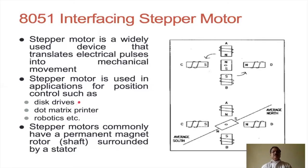In disk drives, the motors are used to position the head on the required sector and track. In a disk, there are a number of tracks and sectors, and the head has to be positioned properly. Similarly, in the dot matrix printer, the motor is used for positioning the head so that the printer prints from left to right, or for moving the paper to the next line — for carriage feed and line feed.